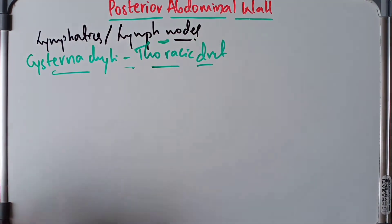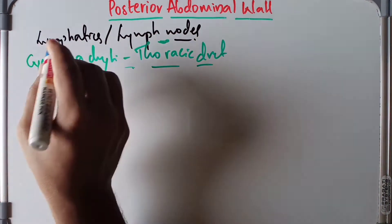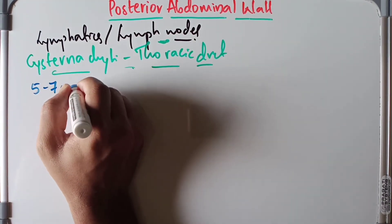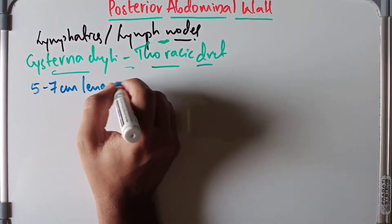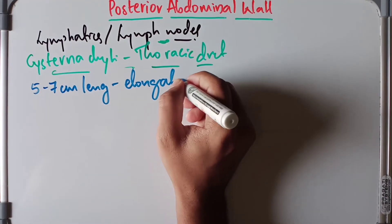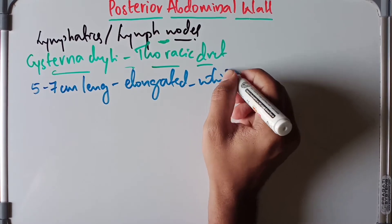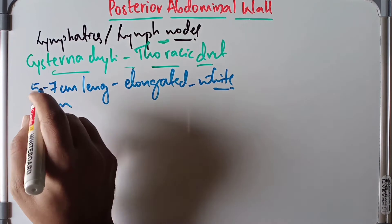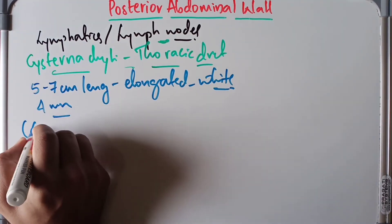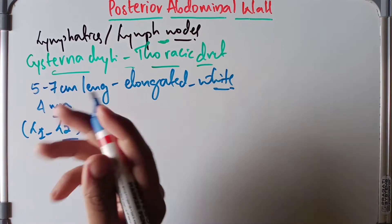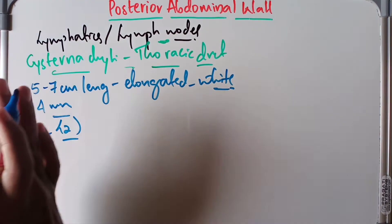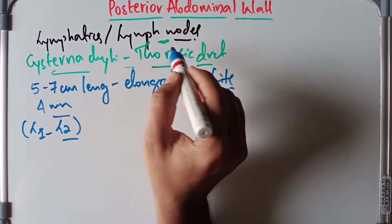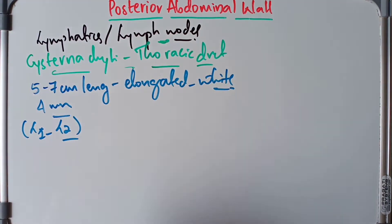A small introduction about the cisterna chyli: it is an elongated white lymphatic sac, five to seven centimeters in length and four millimeters in width. It lies in front of the L1 and L2 vertebrae, between the aorta and the azygous vein, and is hidden by the right crus of the diaphragm. Superiorly, it continues as the thoracic duct.